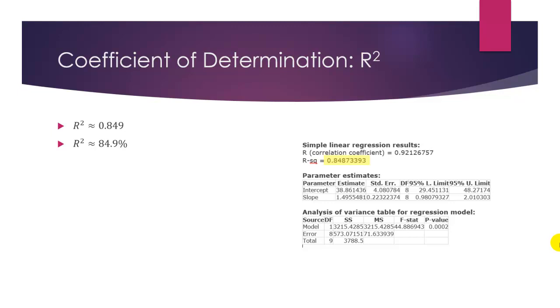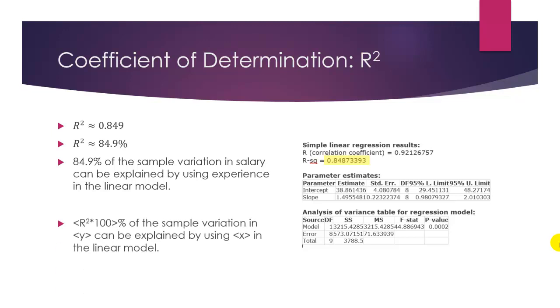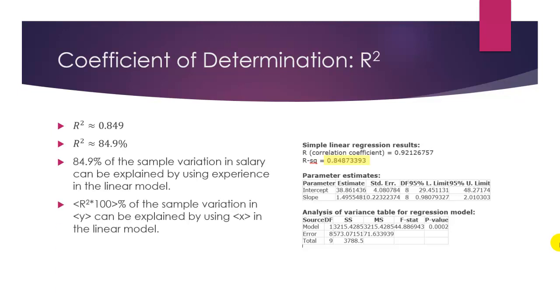Since different professors will have different degrees, abilities, titles, research backgrounds, et cetera. We can practically interpret, though, this 84.9% this way. We can say 84.9% of the sample variation or variance in salary can be explained by using experience in a linear model.